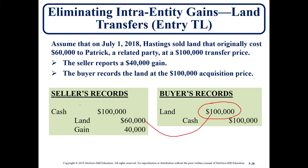To get a picture of this, we have the seller's financial records — this is what the seller, Hastings, would have reported in their financial statements. And then the buyer, Patrick, this is what they would have reported on their financial statements. We can see that the land is currently overstated by $40,000. We have to put that land back to its original cost on a consolidated basis, and we also have to get rid of this gain.